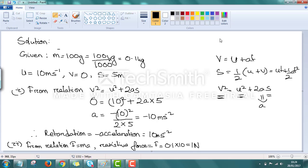We are taking the third one for deducting that acceleration formula. So, from relation V² = U² + 2AS, we can get A = -10 meter per second square.